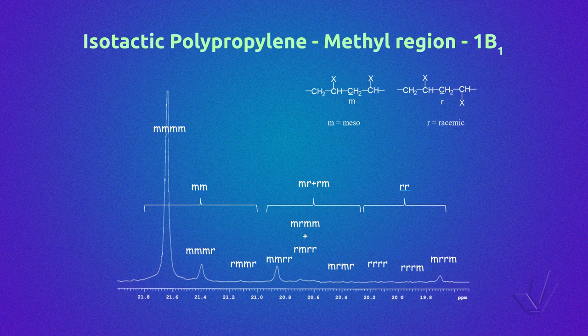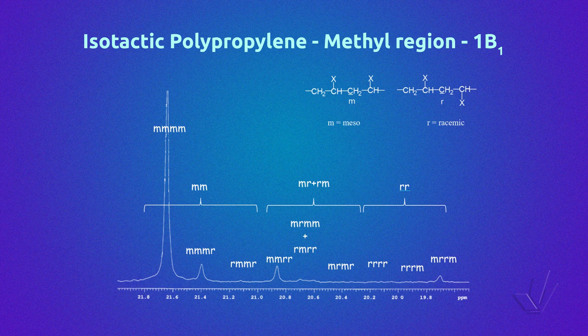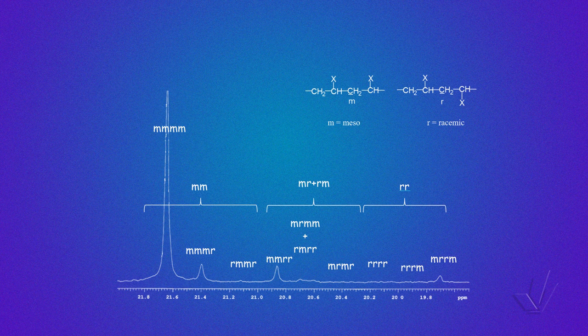As the propylene unit has an asymmetric carbon atom — the methine — it generates different stereoisomers, as discussed in part 4 of this course. Here we have the methyl region of an isotactic polypropylene for reference. When you have two consecutive asymmetric propylene units, there are two possibilities: a meso diad M, where the asymmetric carbons have the same configuration, or a racemic diad R, where they have the opposite configuration. This results in three possible triads — MM, MR, or RR — appearing in this order in the spectrum. Higher sequences such as pentads can also be distinguished.